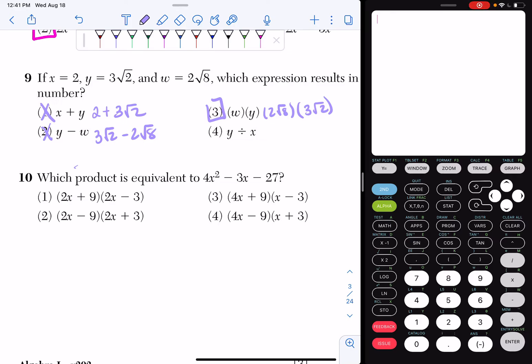Okay, so this one's going to be a bit longer. There's a bunch of ways I can approach this. I can actually do this one. So let's read the question first. So which product is equivalent to 4x squared minus 3x minus 27?